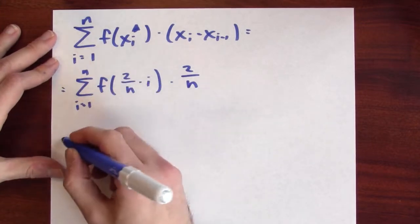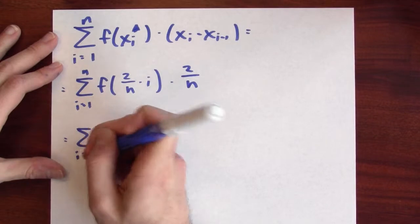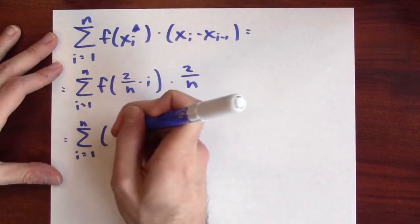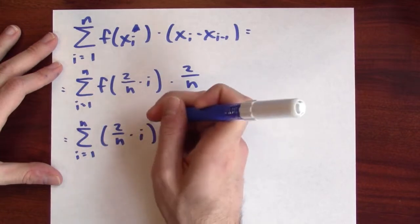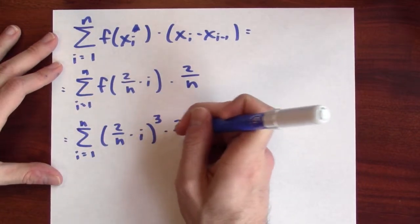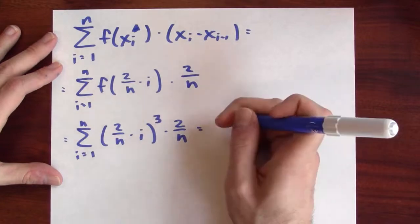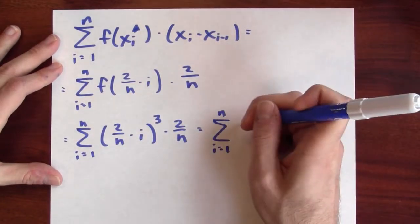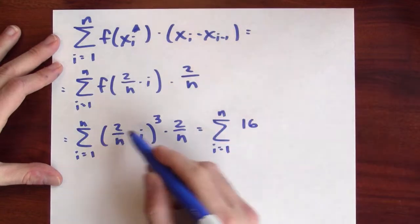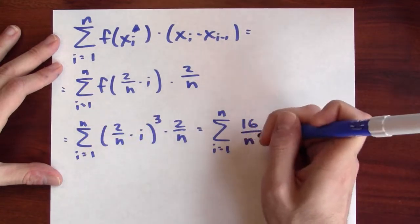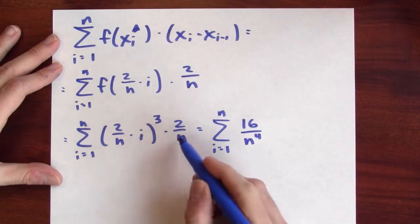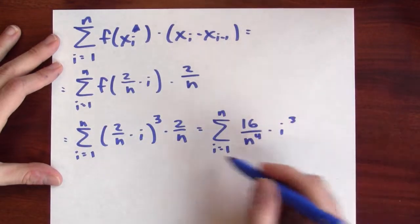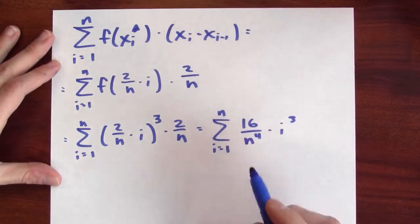Now, the function in this case is the cubing function. So this is the same as the sum, i goes from 1 to n, of 2 over n times i cubed, times 2 over n, which I could simplify somewhat. This is the sum, i goes from 1 to n, of 16 over n to the 4th times i cubed. So that's the particular Riemann sum in this case.